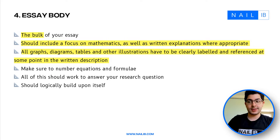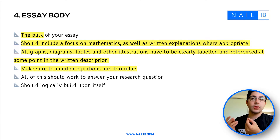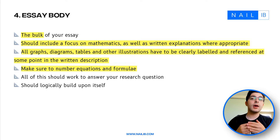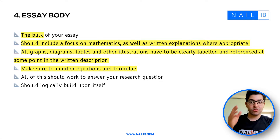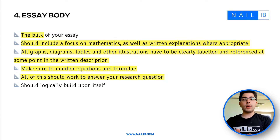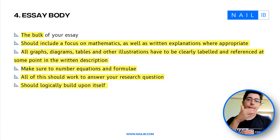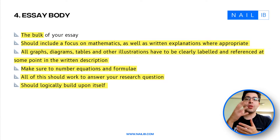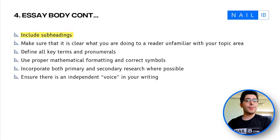You also need to number all equations — I prefer calling them Equation 1, Equation 2, etc. — so you can easily refer back to them. In an extended essay with many equations, labeling them keeps track of everything. All the work in your body should be working to achieve your aims and answer the research question, with everything logically building on itself: step one lays a foundation, step two builds on that, and so on. I also recommend including subheadings, because 4,000 words is very long and hard to follow without them.